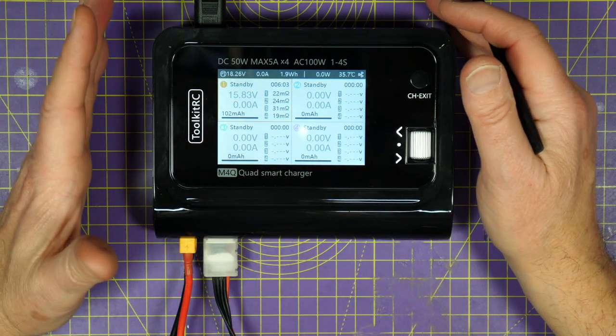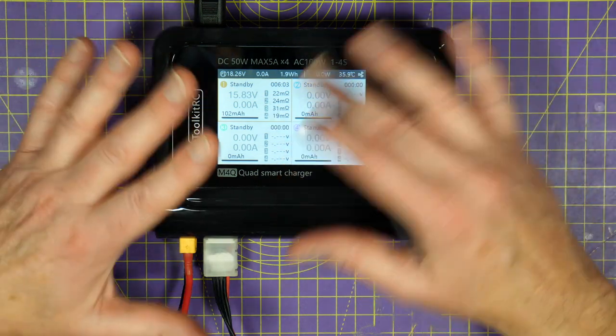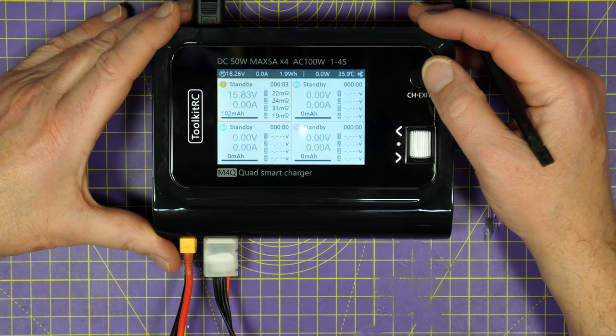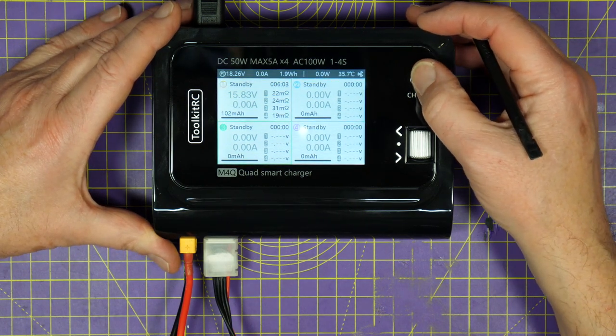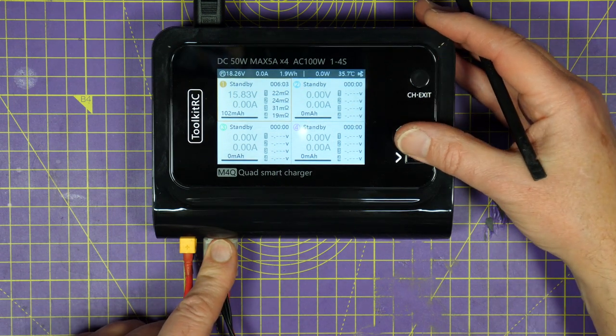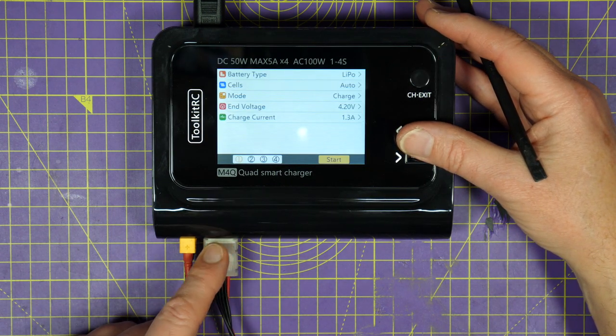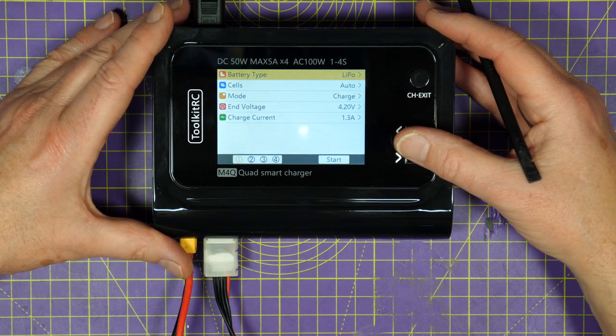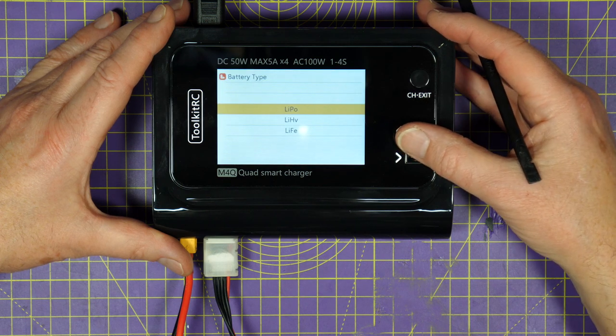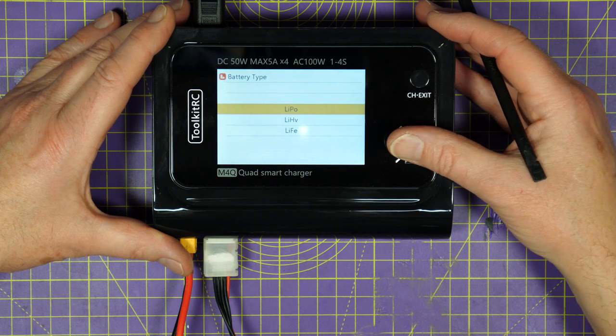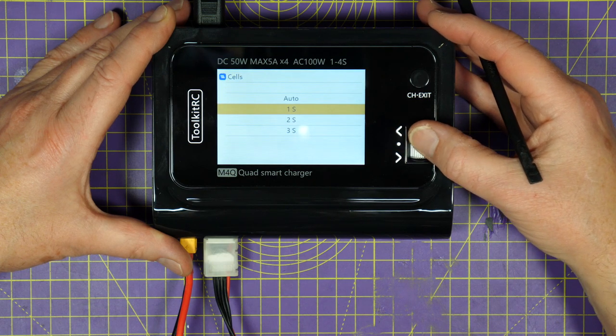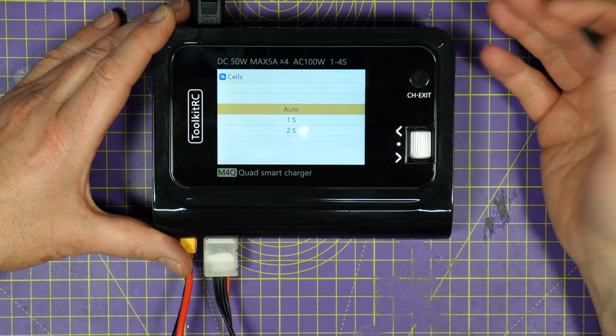And you just select round them using the channel select switch. So, this is like four separate chargers, all independent of each other, all in one box. So, to charge, you just cycle round the channel that you want and I'll pick channel 1 because this is in channel 1 here, and then you select it with the scroll wheel. Then you can choose the battery type. So, you've got a choice of LiPo, high voltage LiPo, Lithium-Ion and so on.